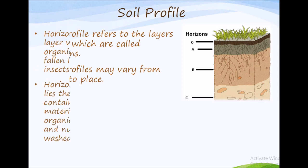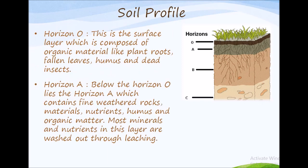The main layers of soil are: Horizon O — this is the surface layer which is composed of organic material like plants, roots, fallen leaves, humus and dead insects. Horizon A — below horizon O lies horizon A, which contains fine weathered particles, minerals, nutrients, humus and organic matter.